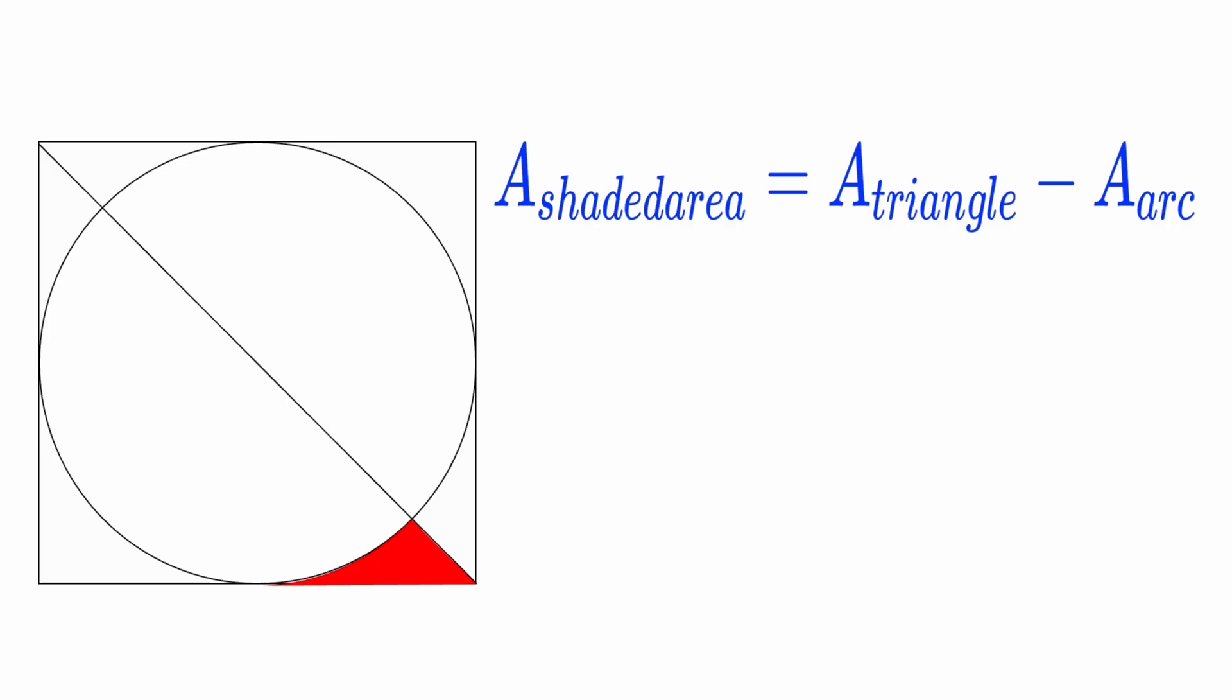Now we put it all together. The area of the shaded region is the area of the triangle minus the area of the arc. That's one eighth of a squared minus one eighth of π times a over two squared. We factor out the one eighth and simplify. Then we plug in a value for a if needed or leave it in terms of a for a general solution.